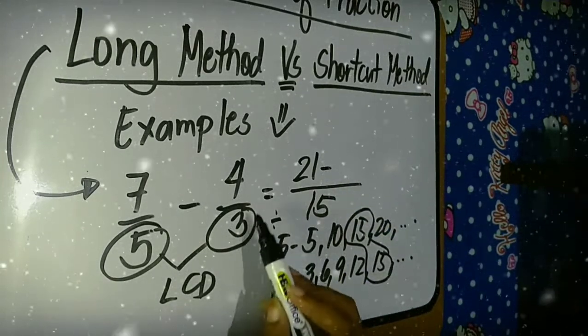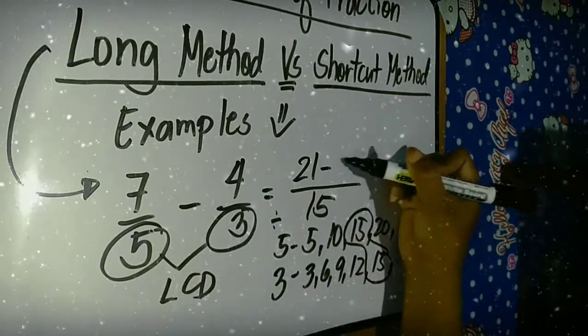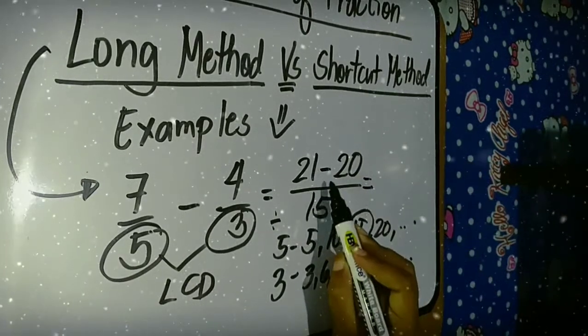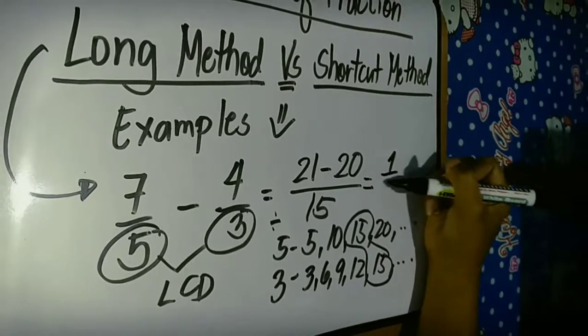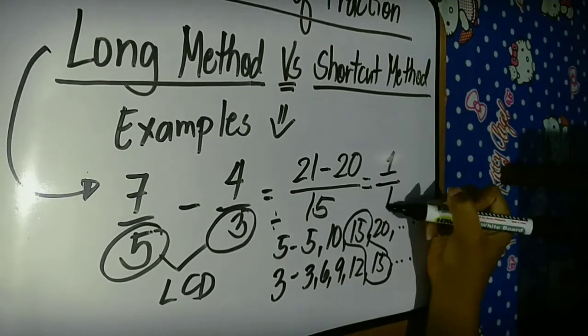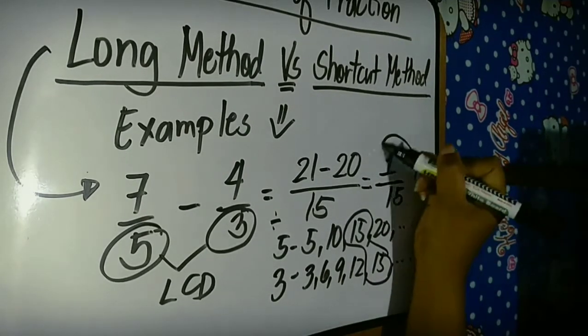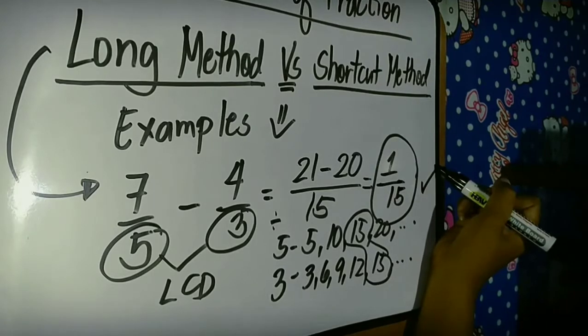15 divided by 3, the answer is 5, times 4, the answer is 20. And then, 21 minus 20, the answer is 1. And copy the denominator, 15. The final answer is 1 over 15.